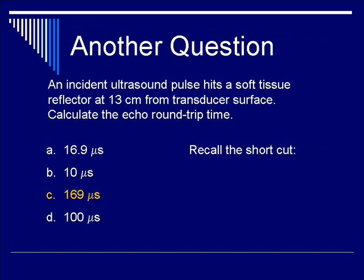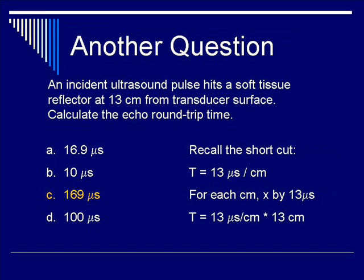Using the shortcut equation T equals 13 microseconds per centimeter, multiply 13 microseconds by the distance of 13 centimeters. Therefore, the total round trip echo time is 13 times 13, which equals 169 microseconds. See how easy it is.